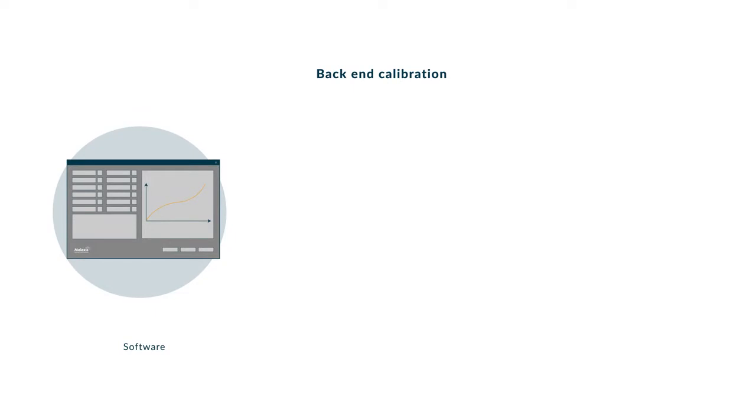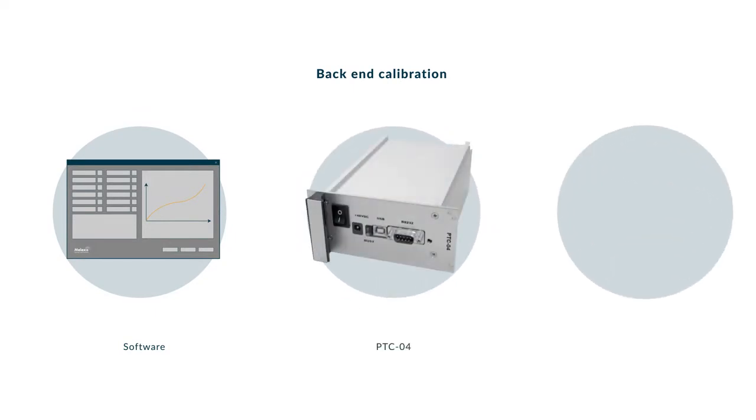But how does it work? The calibration consists of defining a transfer curve and storing it in the sensor's non-volatile memory. This curve will be used to compensate for the non-linearity and the goal is to make the residual non-linearity as small as possible.